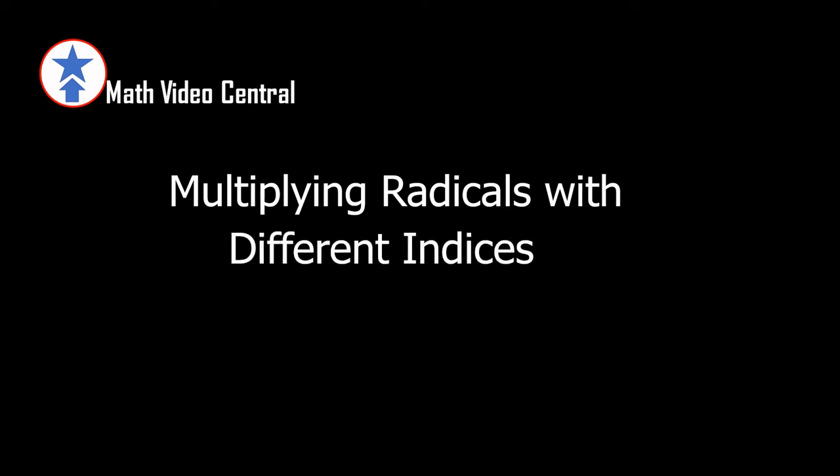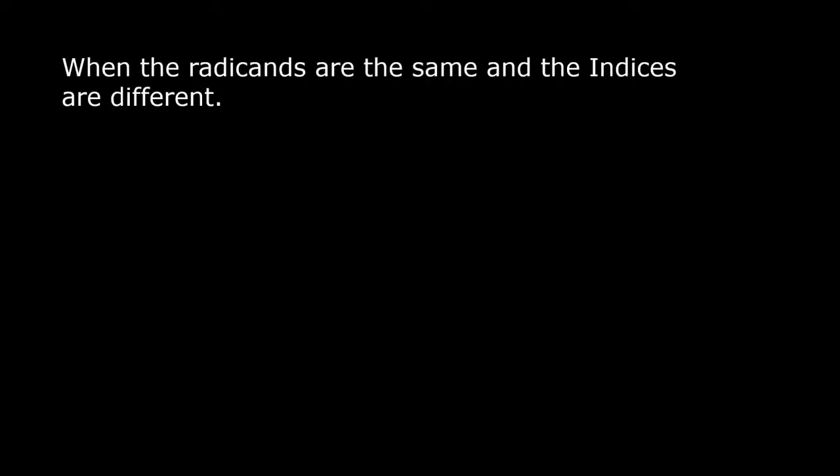Today's lesson is multiplying radicals with different indices — specifically when the radicals are the same and the indices are different.